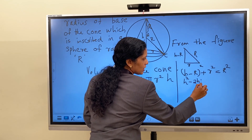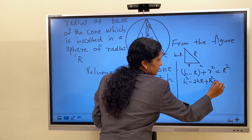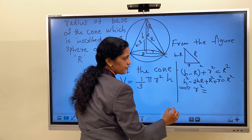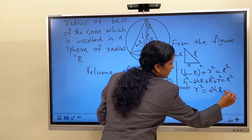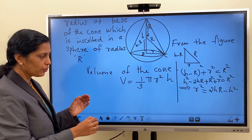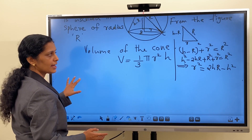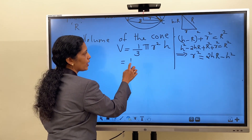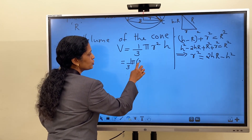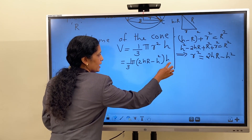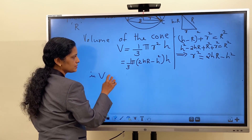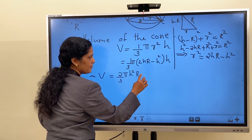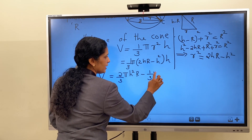By expanding: h² − 2hR + R² + r² = R². Then from this, we get r² = 2hR − h². We are going to substitute this value of r² into the expression for volume of the cone. Therefore, V = (1/3)π(2hR − h²)h, which gives V = (2/3)πh²R − (1/3)πh³.